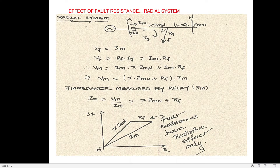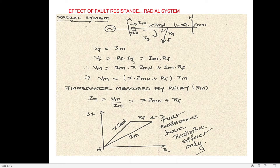The fault point voltage VF equals RF × IF. Since IF equals IM, VF equals IM × RF. The voltage measured by relay RM is IM × X·ZMN plus VF, which gives VM = (X·ZMN + RF) × IM. The total impedance measured by relay RM is VM divided by IM, which equals X·ZMN + RF.